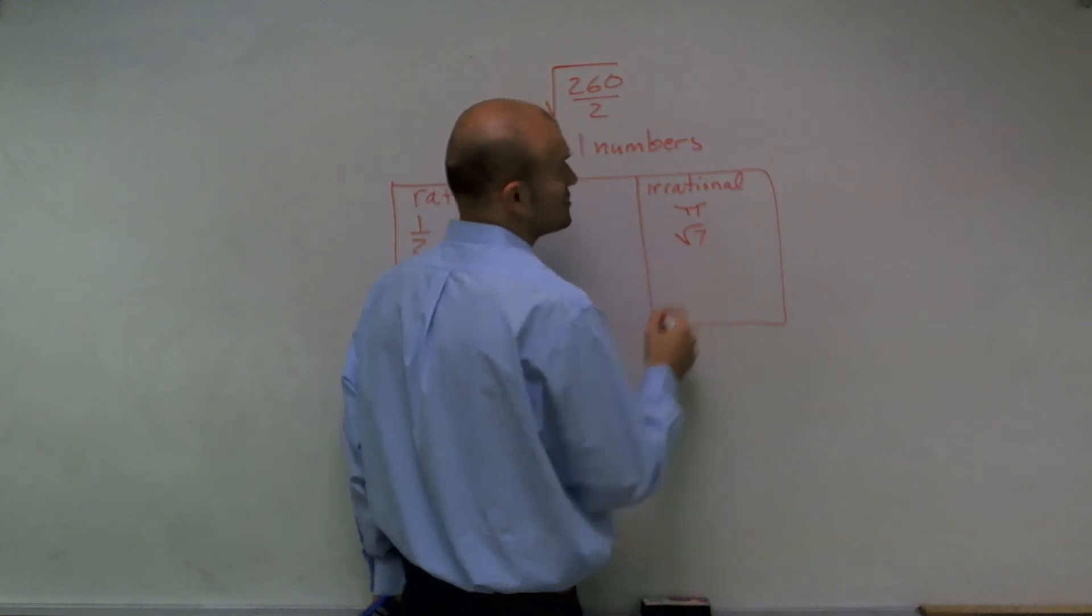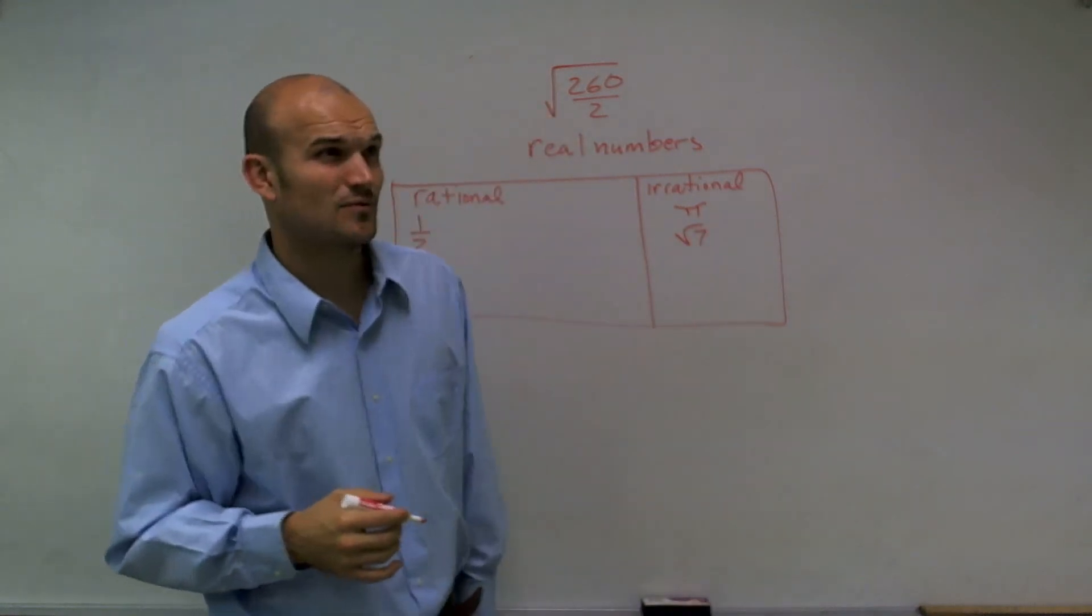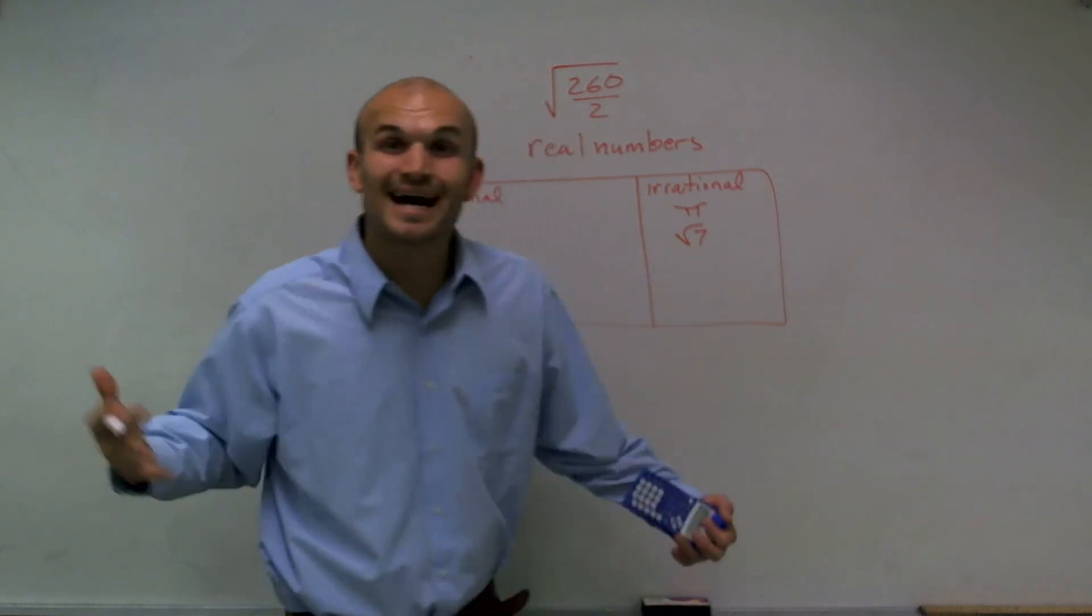Same thing as the square root of 7, 2.6457513 and so on, that goes on and on forever.